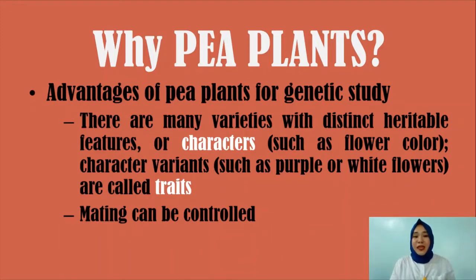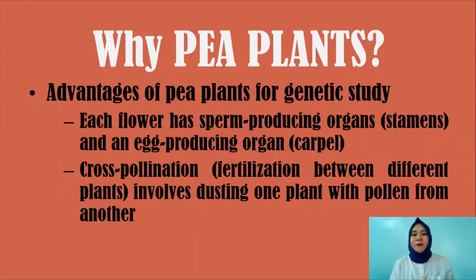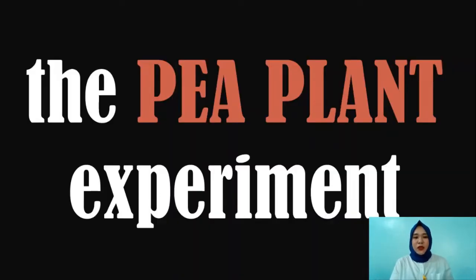Another advantage of pea plants is that mating can be controlled. Each flower has sperm-producing organs called stamens and an egg-producing organ called a carpel. Pea plants have almost complete reproductive parts, which made it easier for Gregor Mendel to do the breeding and cross-pollination. Cross-pollination involves dusting one plant with pollen from another.